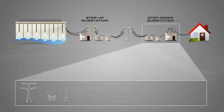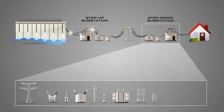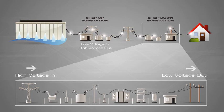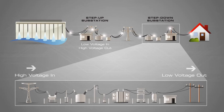A substation is part of an electrical generation, transmission, and distribution system. Substations transform voltage from high to low or vice versa, and may also perform several other important functions. Electric power may flow through several substations between a generating plant and the consumer, and its voltage may change in several steps.